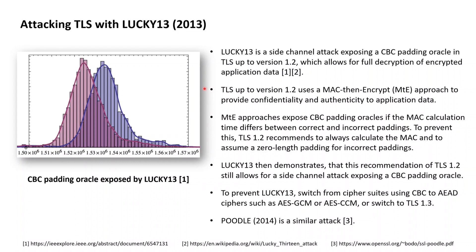Going back to explaining the Lucky 13 attack: due to CBC padding oracle attacks, it is well known that in case a system using the CBC block cipher mode of operation leaks a single bit of information about whether the CBC padding on a ciphertext is correct or not, then the plaintext behind the ciphertext can be recovered. From this, it follows that the Mac-then-encrypt approach used within TLS is also not allowed to leak a single bit of information about whether the CBC padding on the ciphertext was correct or not.